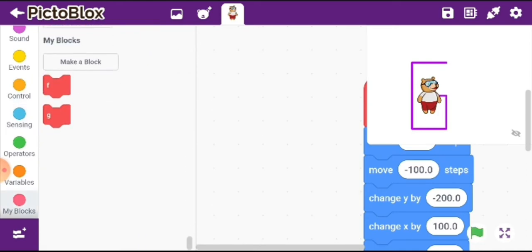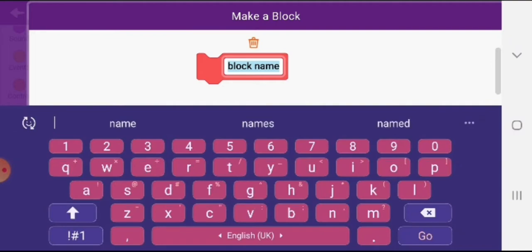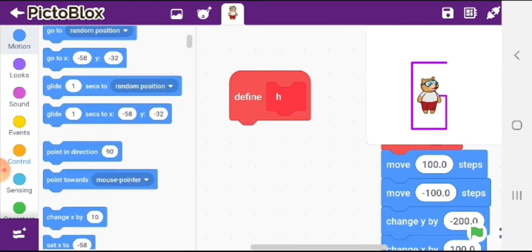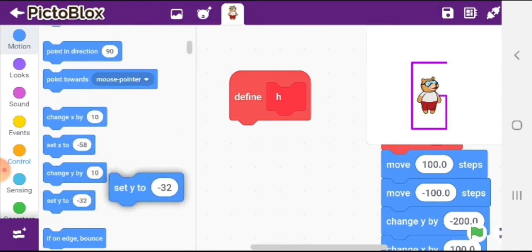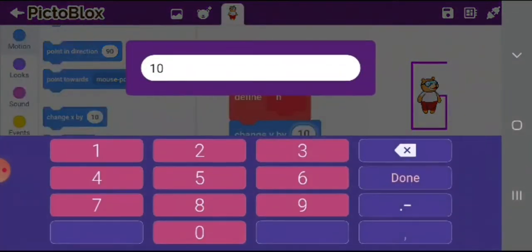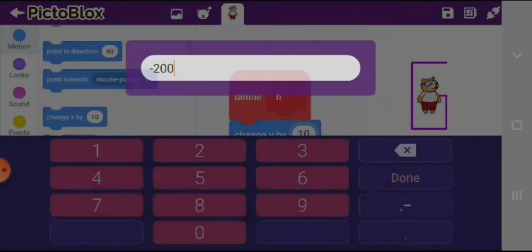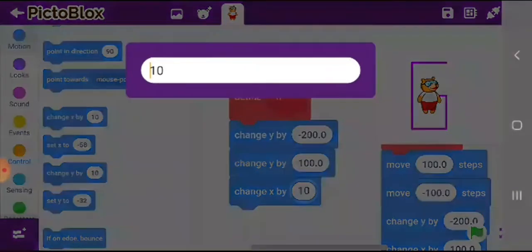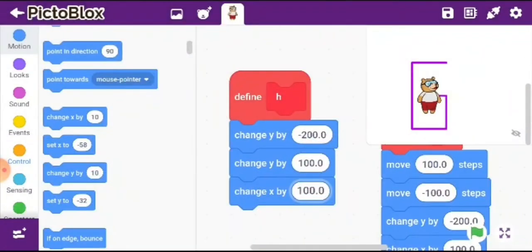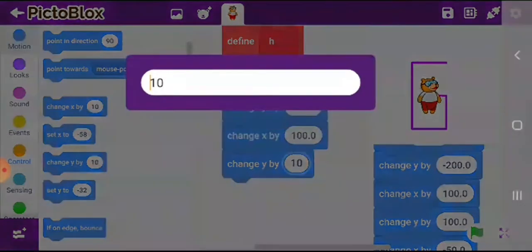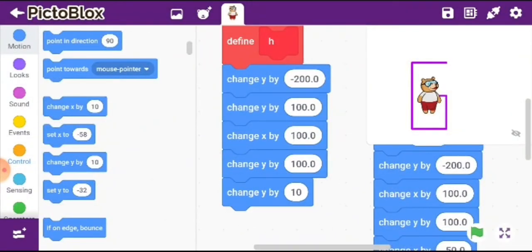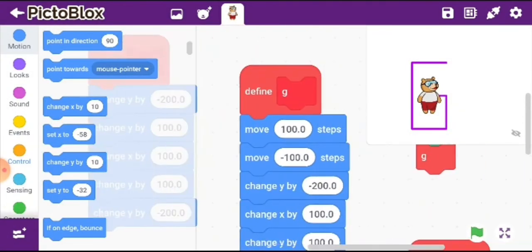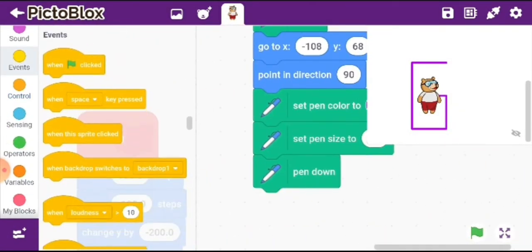Now let us continue with H. H is very easy. Let us create a block, H. We'll use the x and y blocks here. Change y to minus 200, then come on top with 100, then change x by 100, then go on top by 100, then come down by minus 200. Let us check. We'll connect it to the main script. H is done, it was very easy.